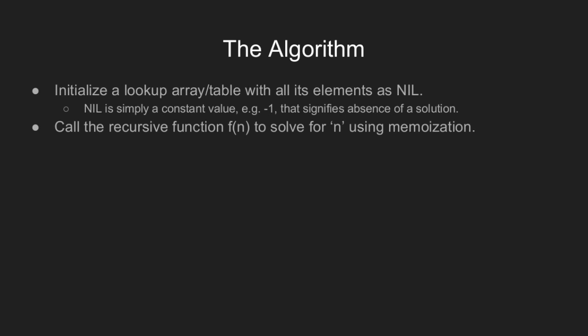We first initialize all the elements of the lookup table to a nil value, say minus 1. Next, we call the recursive function fn that performs memoization for us.